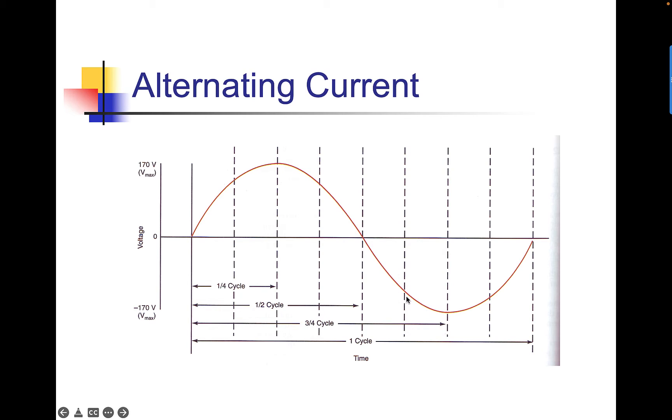We come to 170 volt in the negative, and we come back to zero. This whole cycle from zero, positive, zero, negative, back to zero is one cycle. That happens 60 times a second in the United States, or 50 times a second in a lot of Europe.